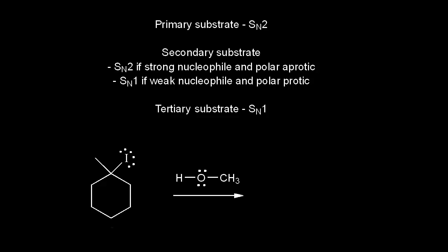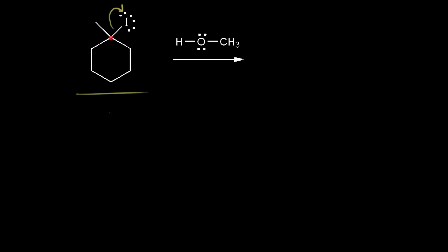Let's look at one final example. This is a tertiary alkyl halide, and a tertiary substrate means we think about an SN1 mechanism. Our first step is loss of a leaving group — these electrons come off to form the iodide anion, and we take a bond away from the carbon in red to form a carbocation. Drawing the carbocation: we have a six-membered ring, and the carbon in red gets a plus one formal charge. This is a tertiary carbocation, which is relatively stable. Our nucleophile is our solvent, which is methanol.